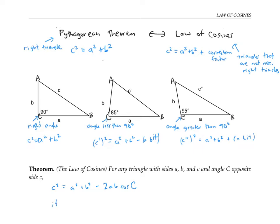Notice that if angle C is less than 90 degrees, cosine of C is going to be a positive number, and so we'll be subtracting a positive quantity, just like we saw in the picture above. If, however, angle C is bigger than 90 degrees, then cosine of C is negative, so by subtracting 2ab cosine C, we're actually adding a little bit, and we get a longer side as in this picture.